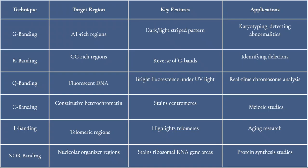C-banding specifically stains constitutive heterochromatin at centromeres, aiding studies on chromosomal stability during cell division. T-banding highlights telomeric regions at chromosome ends, which is crucial for investigating telomere integrity and aging-related studies. NOR-banding targets nucleolar organizer regions to highlight ribosomal RNA gene clusters, facilitating studies on chromosomal function during protein synthesis.